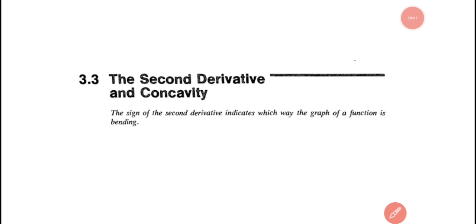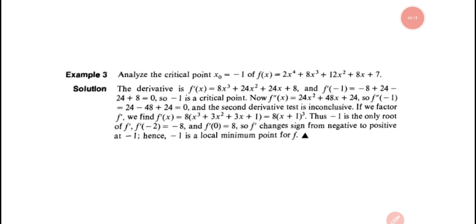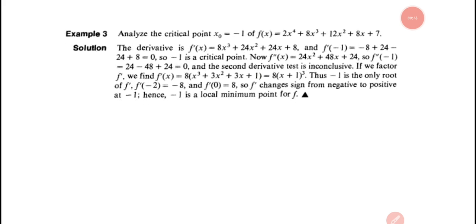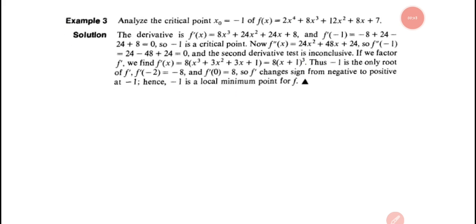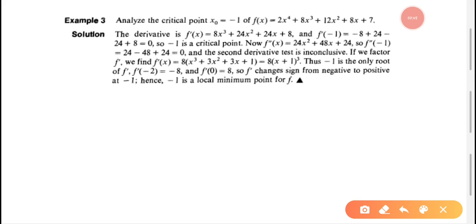Hello everyone. Section 3.3: Second Derivative and Concavity — we are going to learn a few problems. We have done two problems already. Example 3: Analyze the critical point x₀ = -1 of f(x) = 2x⁴ + 8x³ + 12x² + 8x + 7. This function has critical point x₀ = -1. The goal is to analyze the local minimum and local maximum.